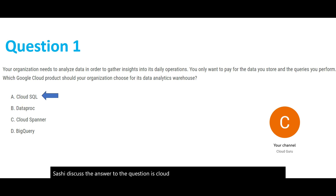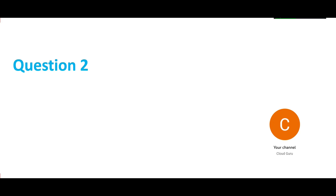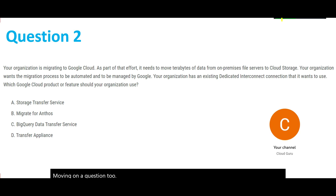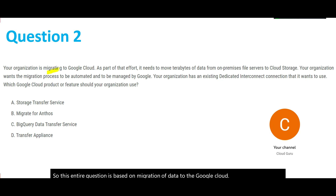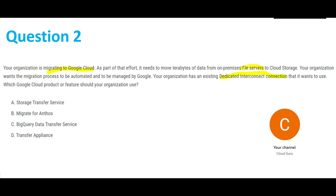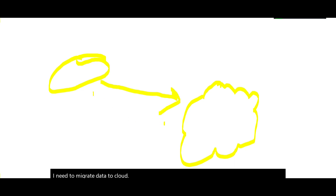Moving on to Question 2. This entire question is based on migration of data to Google Cloud. The keywords are: migrating to Google Cloud, data from on-premises file servers to Cloud Storage, and an existing dedicated internet connection. In the diagram, on-prem is on one side and the cloud is on the other, with an existing internet connection already in place between them.